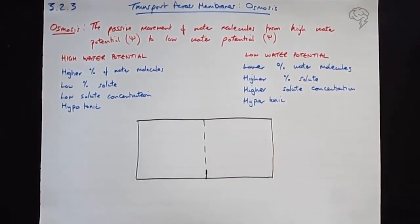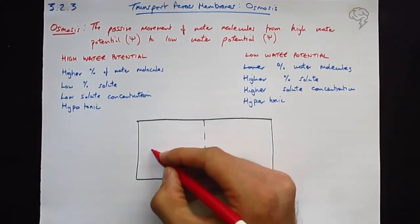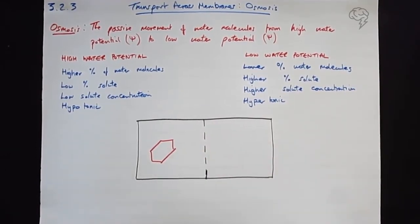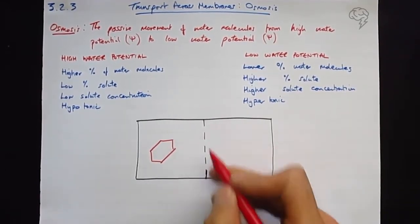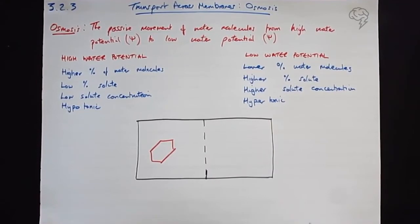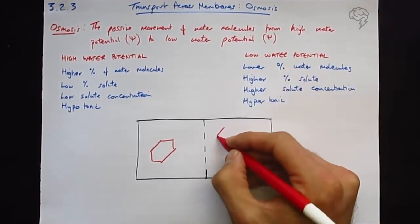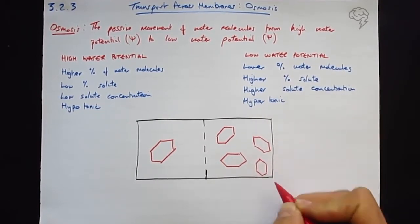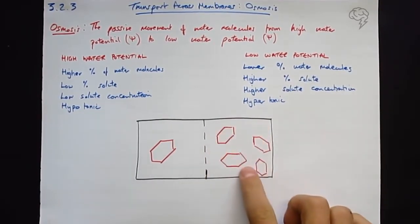So high water potential has got a low percentage of solute. The solute in this example I'm going to do a molecule of glucose, which is a hexose sugar, and draw as a hexagon and draw it quite big, too big to fit through the gaps. On this side we're going to have a high concentration of solute.